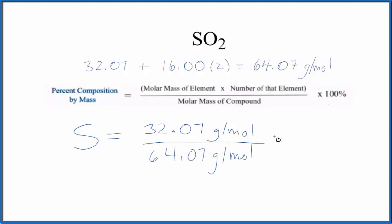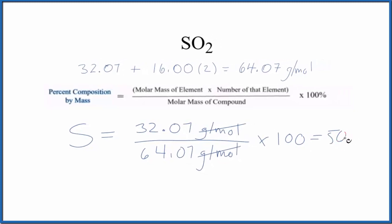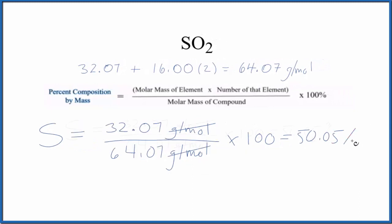Multiply by 100 so we get our percent, and note that grams per mole on the top and bottom cancels out and we end up with 50.05 percent.